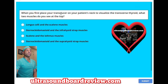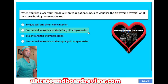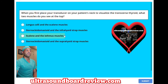When you first place your transducer on your patient's neck to visualize the transverse thyroid, what two muscles do you see at the top? A, longus coli and the scalene muscles. B, sternocleidomastoid and the infrahyoid strap muscles. C, scalene and the isthmus muscles. Or D, sternocleidomastoid and the suprahyoid strap muscles.